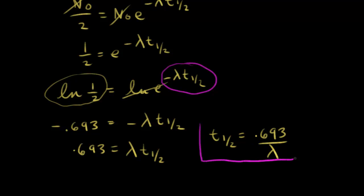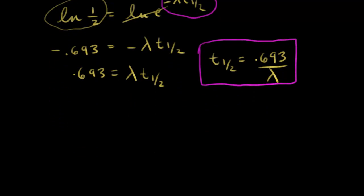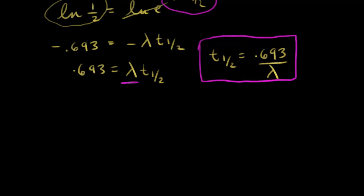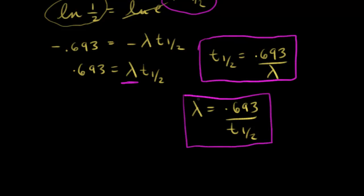This is the standard half-life equation. You can also solve for the decay constant: lambda equals 0.693 divided by the half-life. These are just rearrangements of the same equation — you can go back and forth between half-life and decay constant. If you know one, you can figure out the other. That covers the exponential decay graph. Next, let's talk about semi-log plots, which are another way of looking at the data.